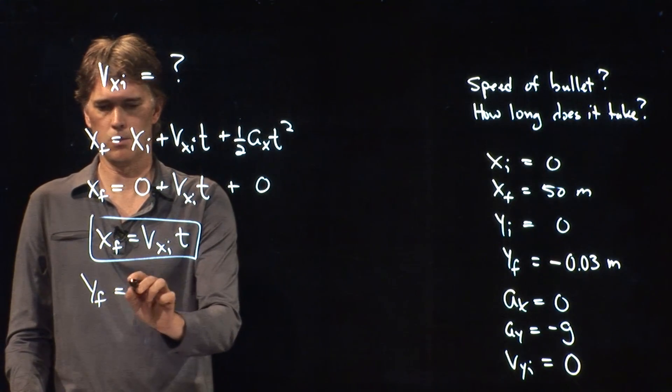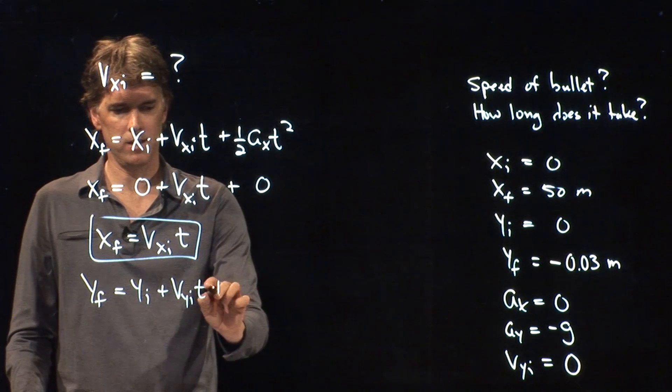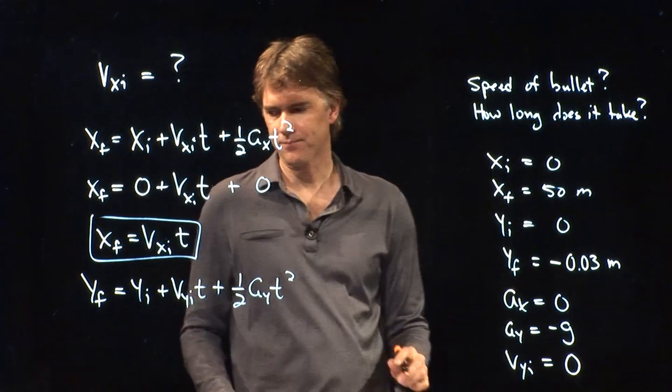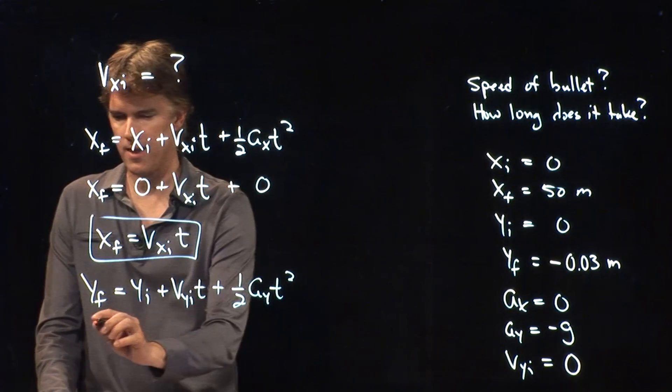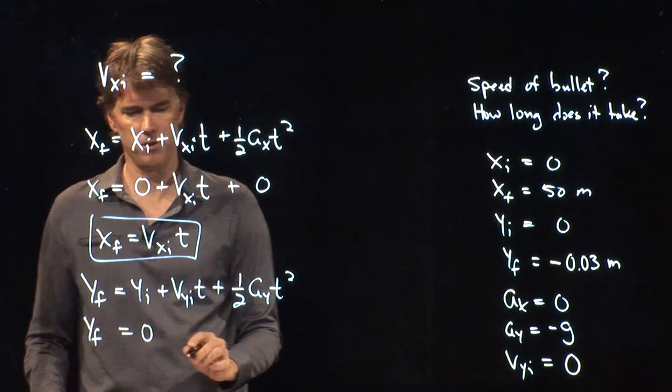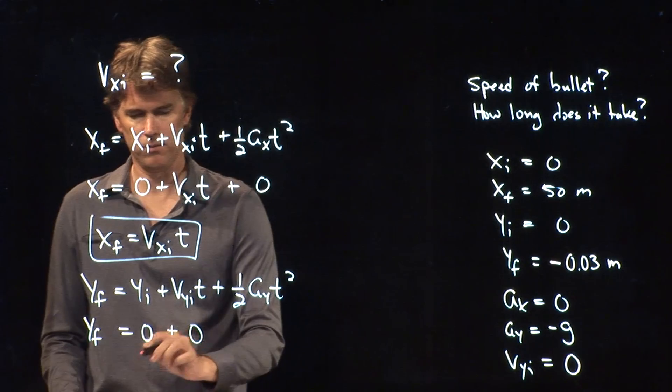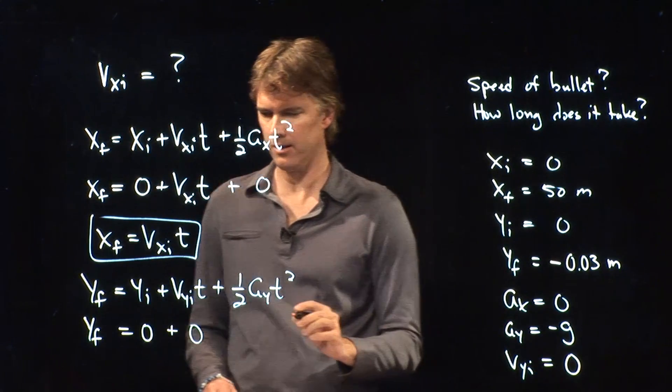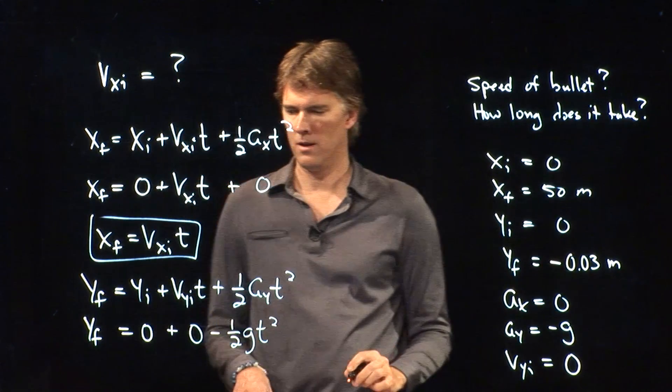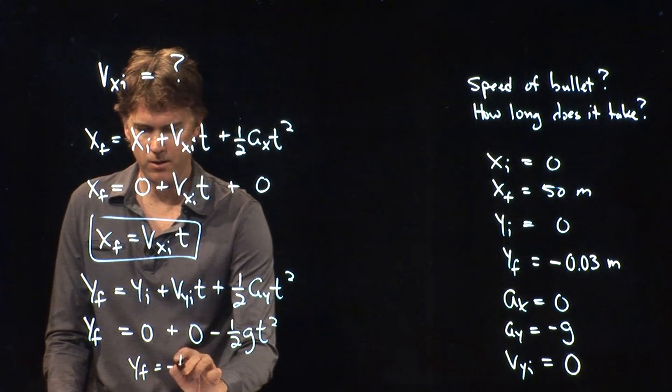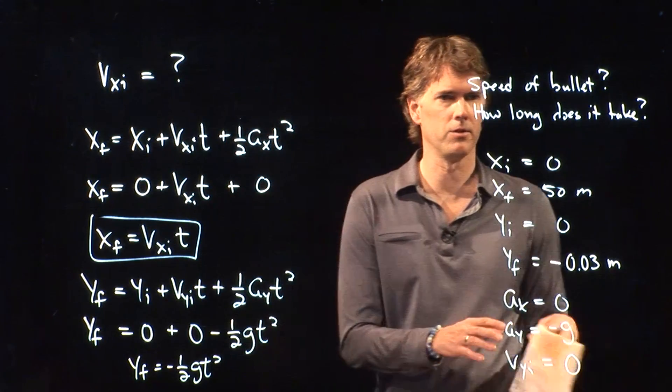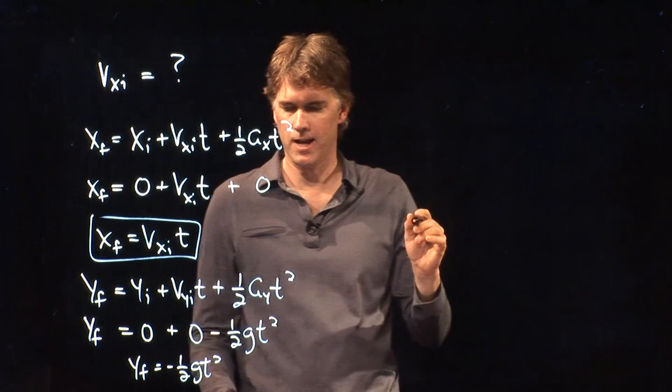y final equals y initial plus vy initial times t plus 1 half ay t squared. And let's see what we know. We know y final. That is our negative 3 centimeters. y initial we said was zero. vy initial we said was also zero since it was fired horizontally. And ay is negative g. And so now we have a nice little equation here that we can solve for t. Let's do that. We'll solve it for t and we'll plug it back into our other equation. yf equals minus 1 half g t squared.